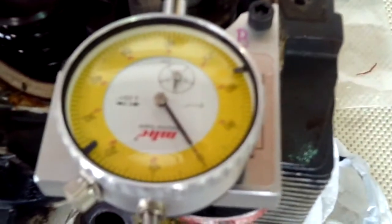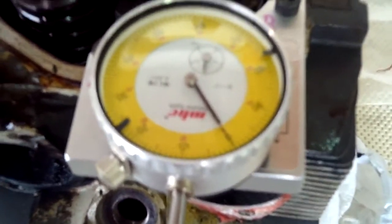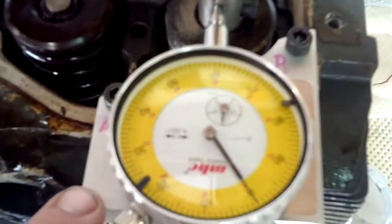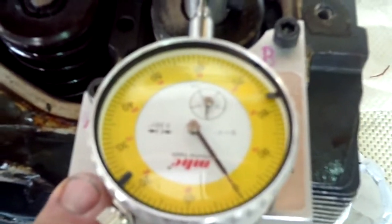We broke one of our dial indicator feet, so we ordered another whole set. This allows us to have, while we're reading one valve, we can be setting up for the next cylinder, so it makes it go a little quicker.